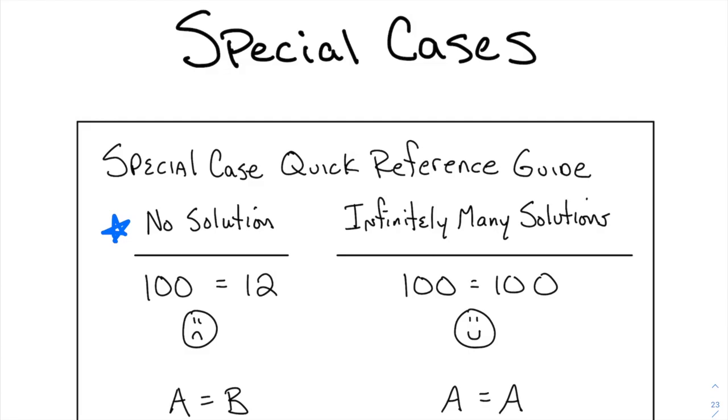On the other side of the spectrum are the IMS, or the infinitely many solutions. Problems here, there are so many answers. In fact, there's an unlimited number of answers, and we would normally reference the fact that IMS are infinitely many solutions. Any number works. Literally any value works, and that's why we might reference IMS.